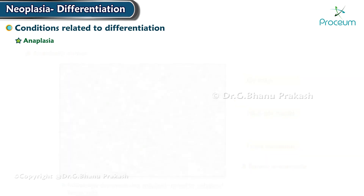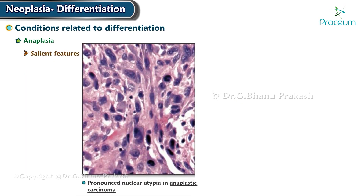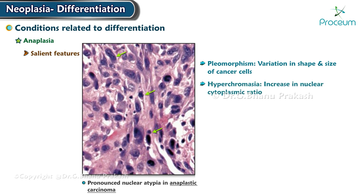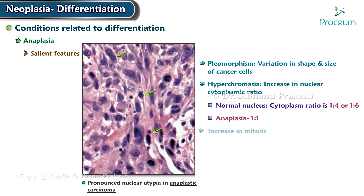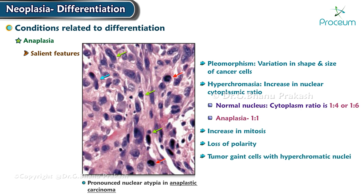Salient features of anaplasia include: pleomorphism — variation in shape and size of the cancer cells; hyperchromasia; increased nuclear to cytoplasmic ratio, where the normal ratio of 1:4 or 1:6 becomes 1:1 in anaplasia; increased mitosis; loss of polarity; and tumor giant cells with hyperchromatic nuclei.